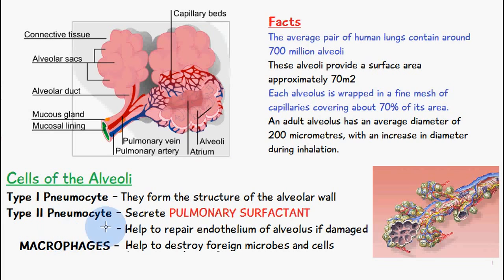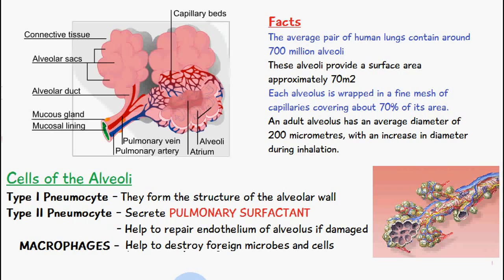Type 2 pneumocytes are very important - they secrete something known as pulmonary surfactant. There will be a video on how pulmonary surfactant works in the description below. It helps with the elasticity of the lung and helps it to expand and contract. Another function of Type 2 pneumocytes is to repair the endothelium of the alveolus if there is any damage. Finally, we have macrophages in the alveolus, which help to destroy and take up bacteria and cellular debris, helping to clean the lungs from infections or debris.